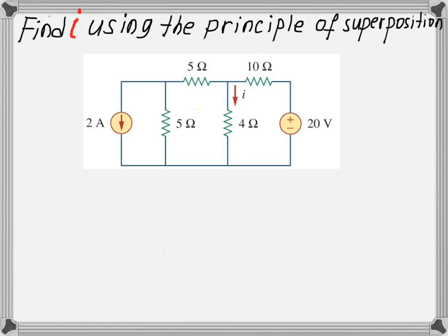Superposition. Let's go through the main steps of the principle of superposition by solving the given example. The question is to find current i using the principle of superposition. Before we start solving the question, let's briefly talk about what the principle of superposition is. It's all about calculating the contribution of each independent source separately and then adding them up.